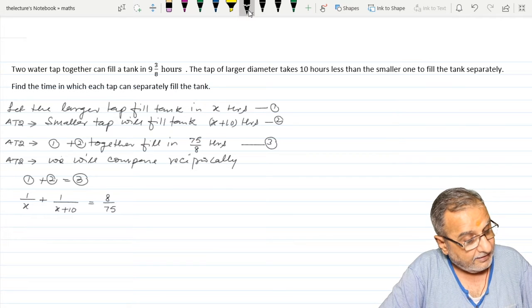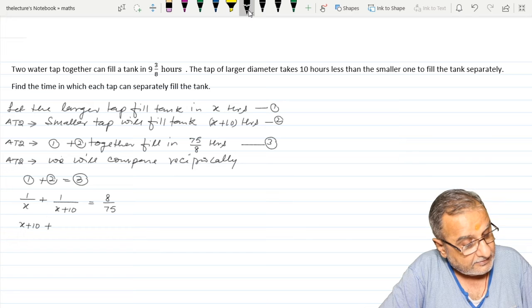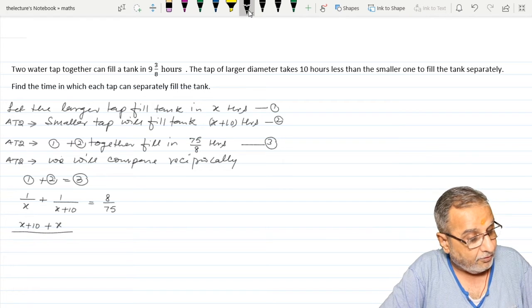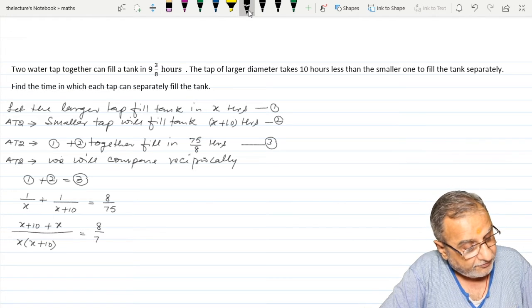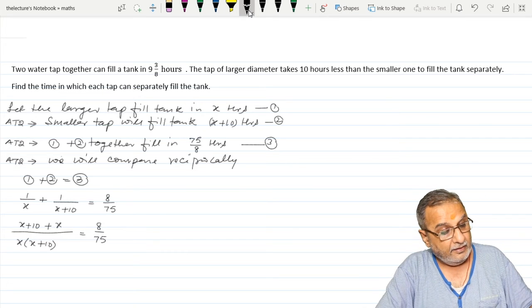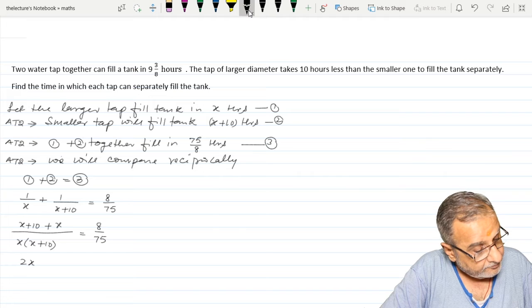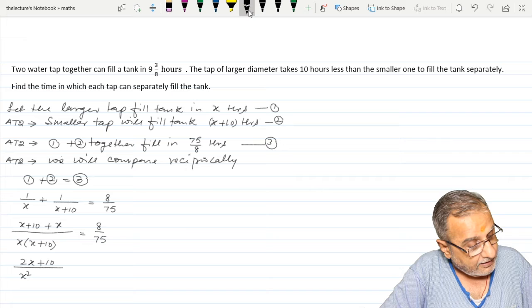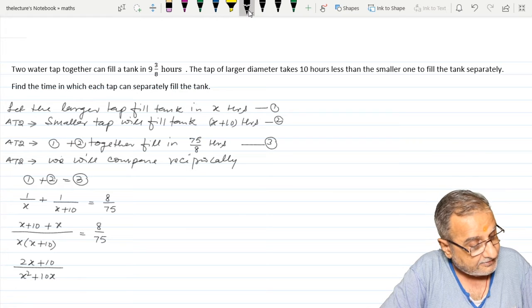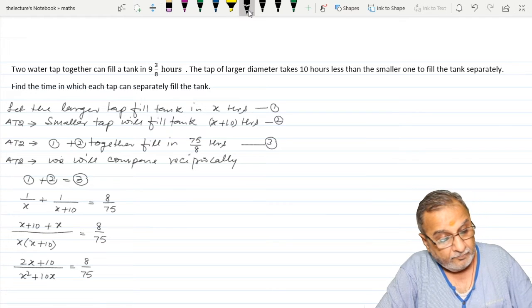Now taking LCM, that is X plus 10 plus X upon X times X plus 10, and that equals 8 upon 75. Now, 2X plus 10 upon X squared plus 10X, that equals 8 upon 75.